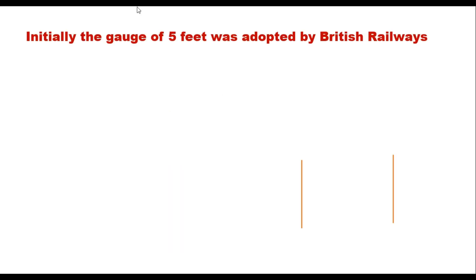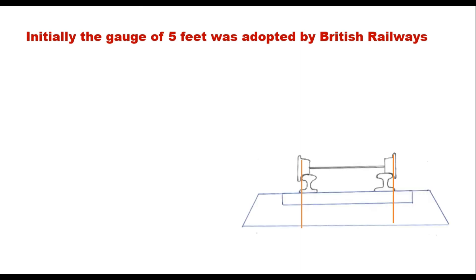Initially a gauge of five feet was adopted by British railways, and that was the time when the wheel flanges were outside the rail. The flange was outside the rail and therefore the gauge was defined as the clear distance between the outer faces of the rails. Running faces were then outer faces and this gauge was kept exactly five feet.